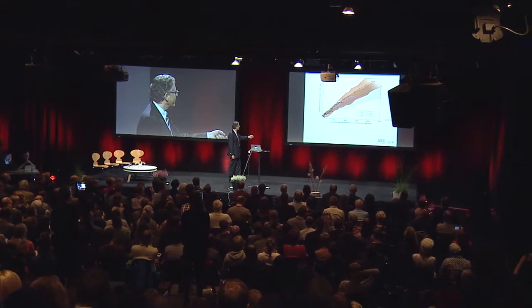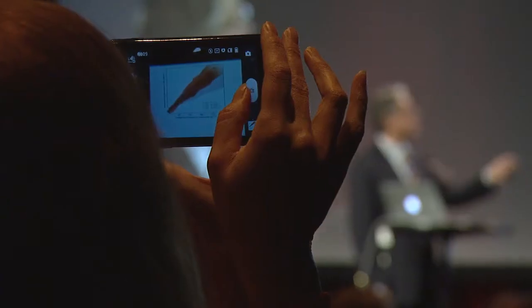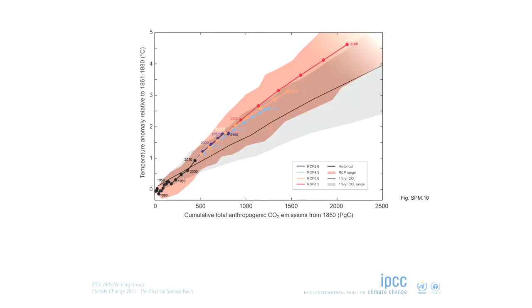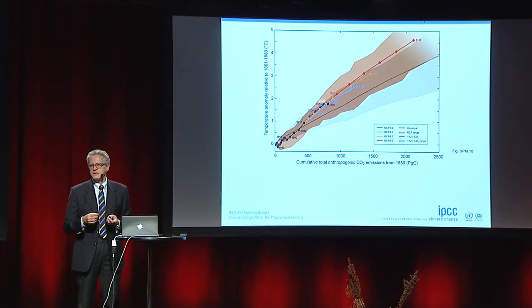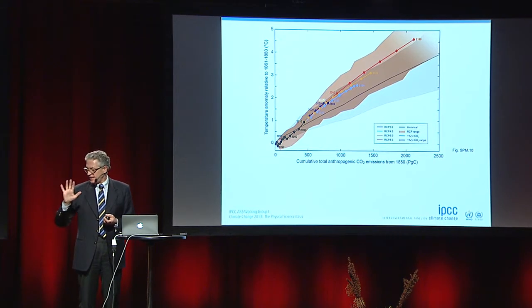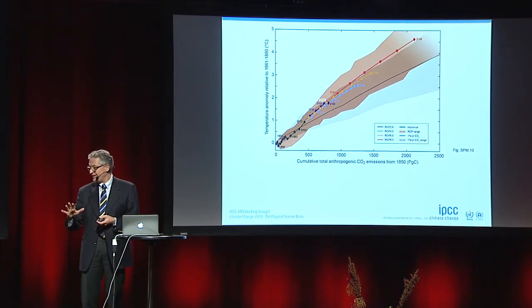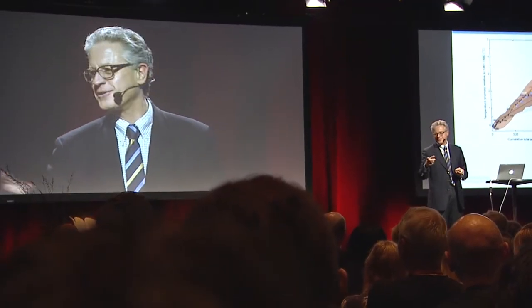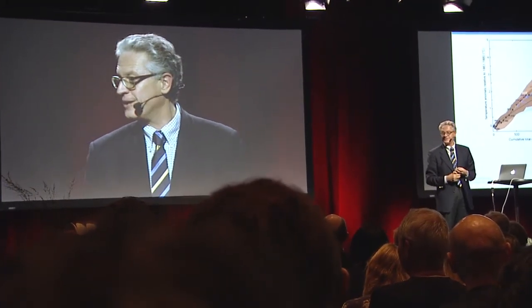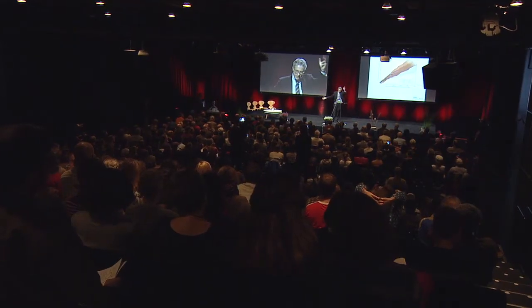So that is the horizontal axis. And then on the vertical, we show the temperature change since that more or less same date — 1860 to 1880 — a long time ago, essentially where the fingerprint was not visible on a global scale in the greenhouse gas concentrations. So those are the two axes.